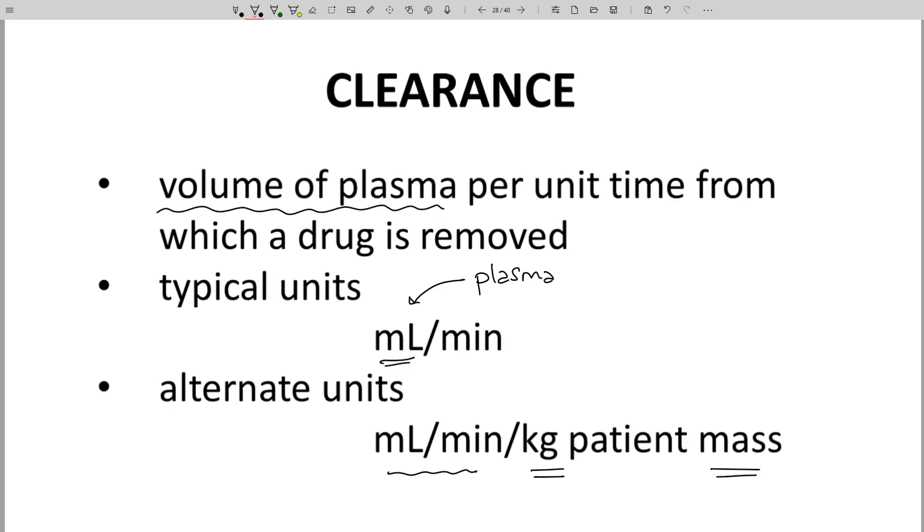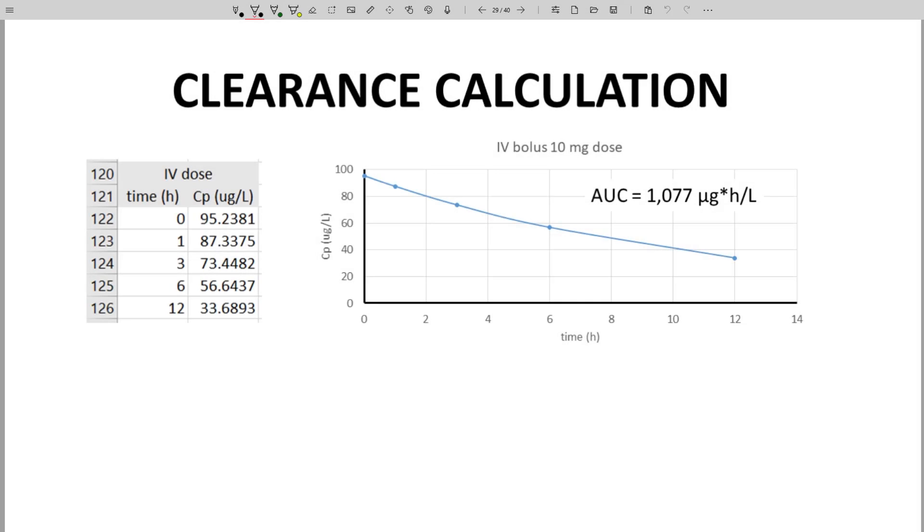Let's see a calculation. On the left are some CP time data points for an IV bolus. Through several steps, which we saw in an earlier video, we could determine the AUC for the corresponding CP time graph. Presumably, if we have the CP time data, we would also know the mass of the dose. Above the graph, it's 10 milligrams. That's all we need.